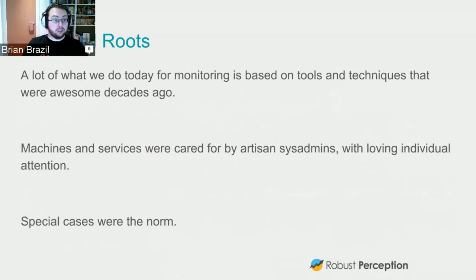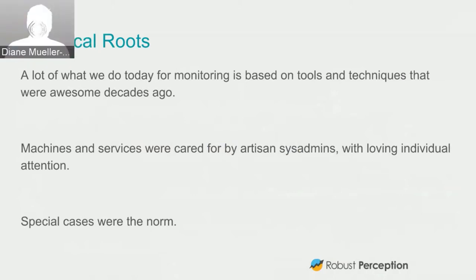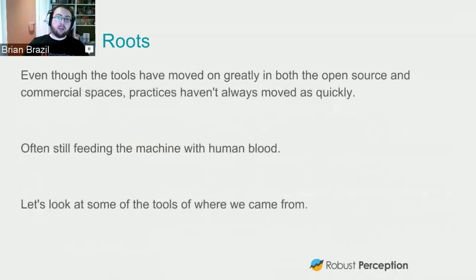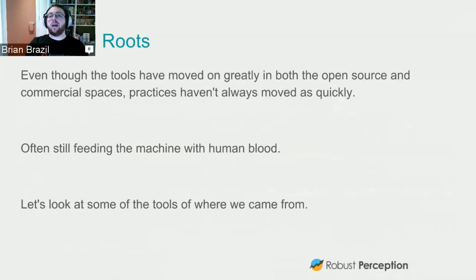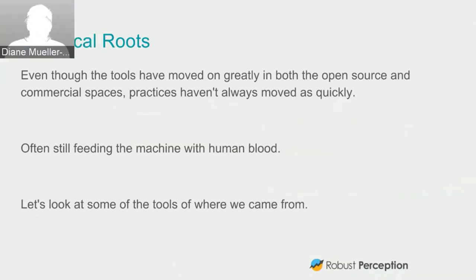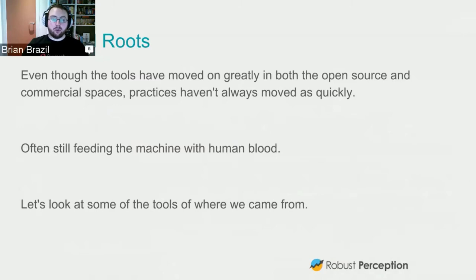Back in the day, well before things like OpenShift existed, you had a handful of machines — never even a full rack. They were cared for by people who were more artisans, giving loving care and attention to everything, and special cases were the norm. Our tools have moved on greatly — from manual configuration to Chef and now to Kubernetes and OpenShift. But many practices are still stuck back in those days, and we're often still feeding the machine with human blood, doing things that basically burn people out for no appropriate gain in productivity.